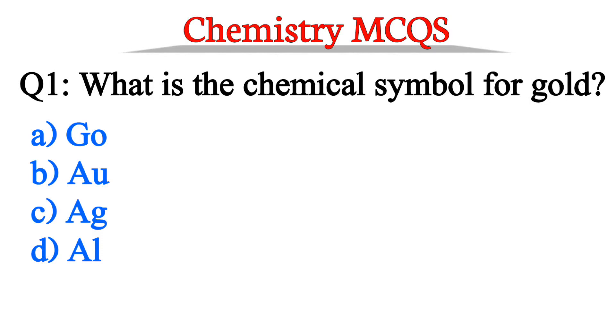Question number 1. What is the chemical symbol for gold? The correct option is option B, Au.